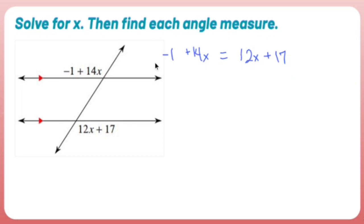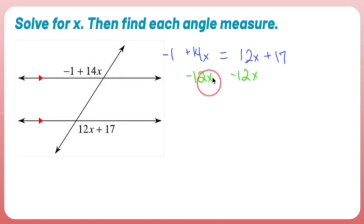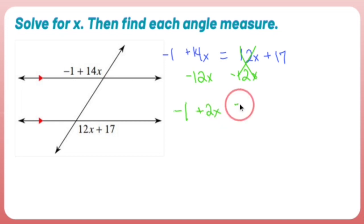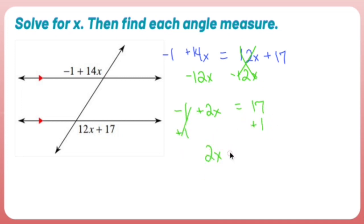Now it's just an equation with x on both sides. I'm going to subtract 12x from both sides, which leaves me with negative one plus 2x equals 17. Adding one gives 2x equals 18. Dividing by 2 gives x equals 9.